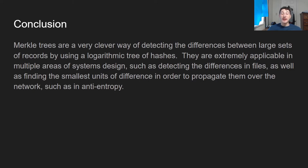In conclusion, Merkle Trees are a really cool way of detecting the differences between two sets of records using a hash tree. We can detect those differences in logarithmic time by traversing down the tree. Once we've figured out those differences, it allows us to send that minimal unit of file diffs over the network, making things a lot more efficient. We can see these come up in system design problems such as Git version control systems, anti-entropy, or blockchain — though I'm not going to cover blockchain today. I am planning on doing a blockchain or DeFi video in the future. I hope this was useful, and I'm going to get myself to the gym — have a good one.